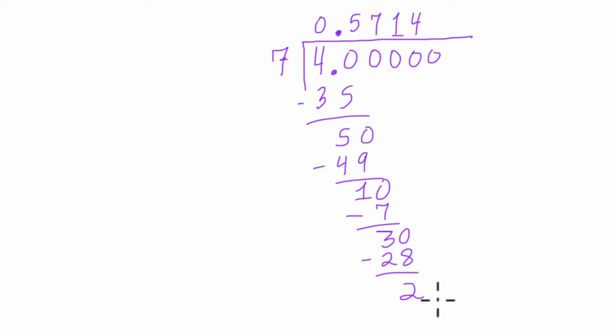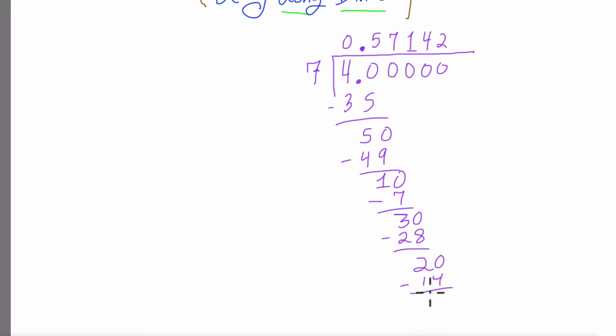And 7 goes into 20 twice. 7 times 2 is 14. And 20 minus 14 is 6. Carry the 0 down. And 7 goes into 60 eight times. 8 times 7 is 56. And 60 minus 56 is 4.